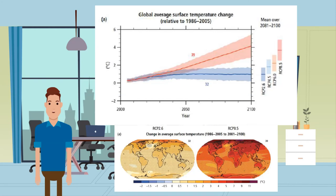Global surface temperatures are expected to rise by the end of the century. The amount of warming is projected to be between 1.1 and 6.4 degrees Celsius, although the amount of warming is dependent on location — there will be a lot more warming in the Arctic.